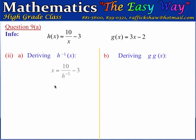To calculate h to the minus 1 of x, we interchange the representation of the domain with the representation of the range. h of x represents the range of the function, and x represents the domain of the inverse function. The range of the function becomes the domain of the inverse function, and the domain of the function becomes the range of the inverse function, represented as h to the minus 1. All we need to do is transpose the formula to make h to the minus 1 the subject.